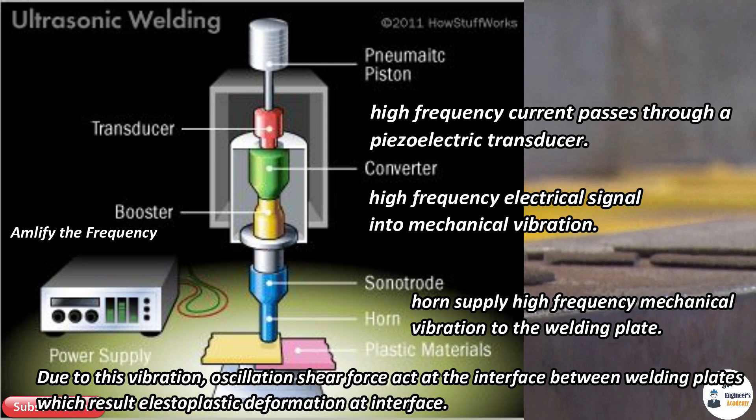This vibration also creates a localized temperature rise due to mechanical force and friction. This heat helps in plastic deformation at the interface and makes a strong joint without melting of the workpiece or using filler metal.